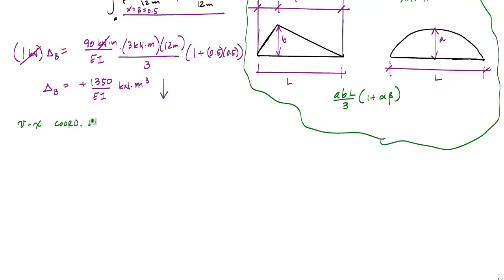my displacement or the value of my elastic curve at 6 meters or at midspan is equal to negative 1,350 over EI kilonewton meter cubed.